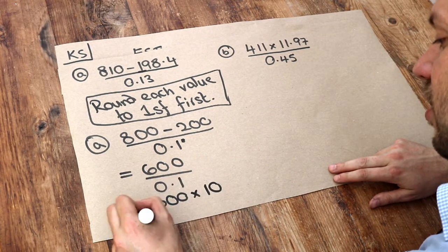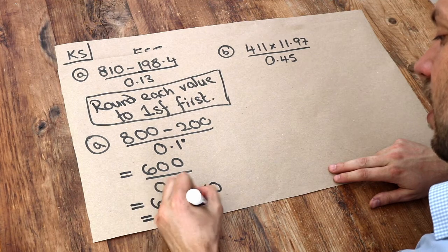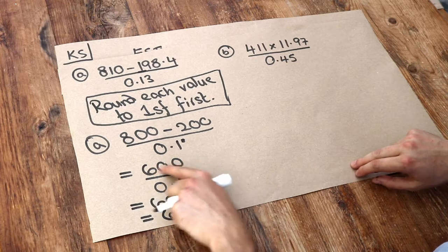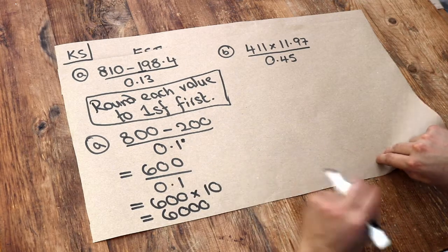And 600 times 10 is 6,000. Be careful, 600 divided by 0.1 is not the same as 600 divided by 10, because a lot of students would put 60.